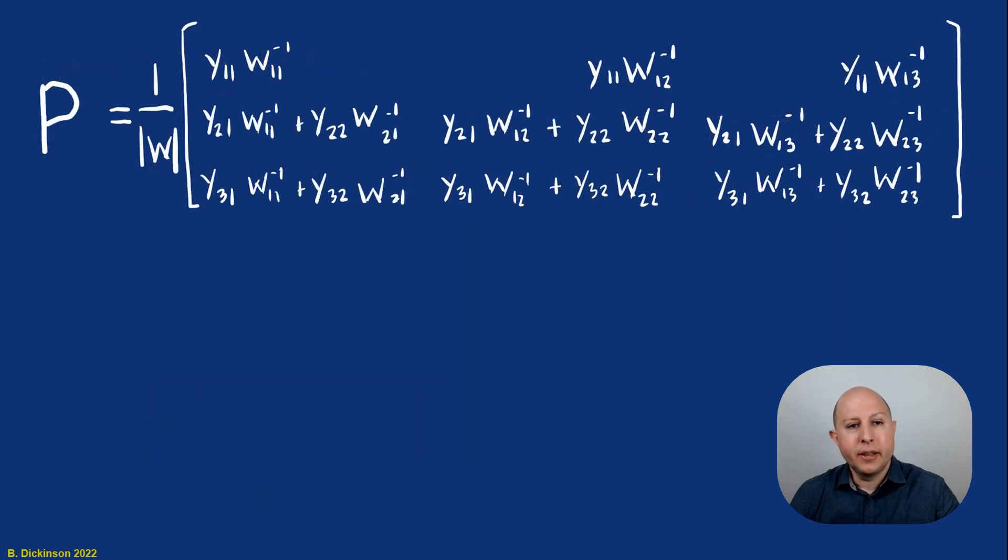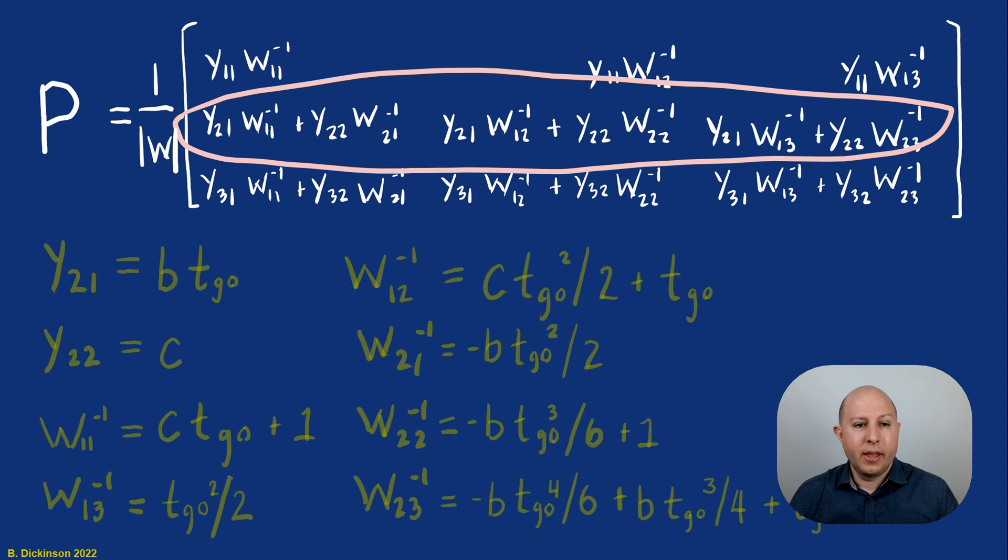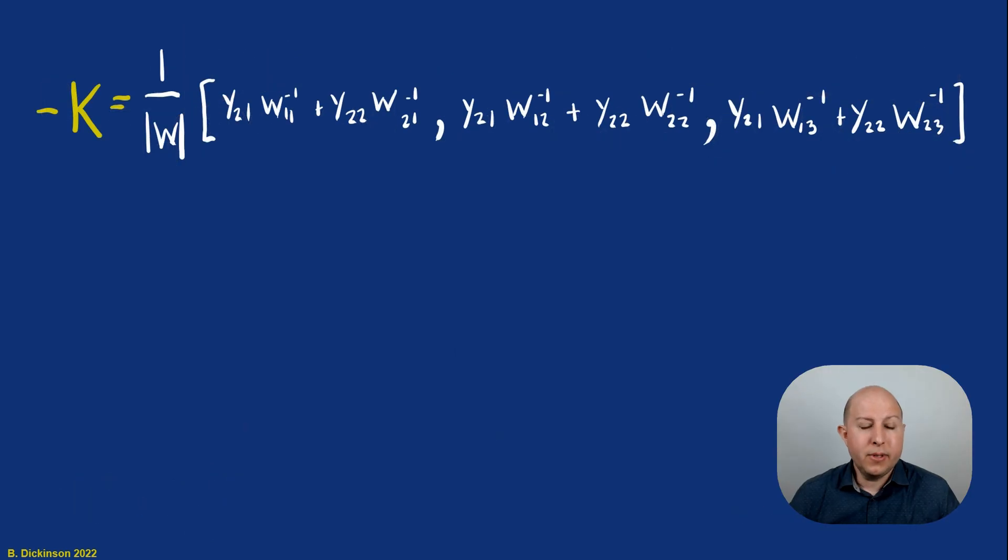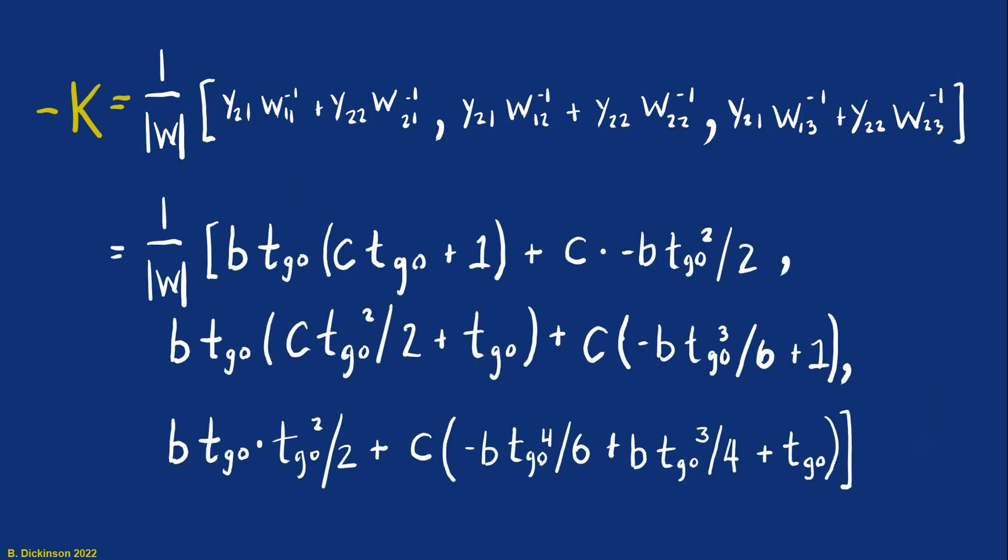So here's P. There's our second row. So there's the data. There's the polynomials that we can substitute in. And we'd simply do that. And we get minus K in doing so. Group some terms.